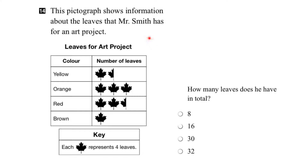In this question, we're given a pictograph that shows visually the number of leaves that Mr. Smith has for an art project. These leaves are broken down into various colors: yellow, orange, red, and brown. What we have to do is figure out how many leaves Mr. Smith has in total.